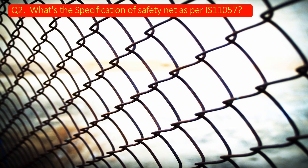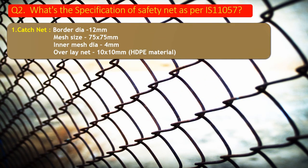Question number 2: What is the specification of safety net as per IS-2105? As per IS-2105, the first type of net is the catch net. The specifications of this net are: border diameter 12 mm, inner mesh size 75 by 75 mm, inner mesh diameter 4 mm, and overlay net 10 by 10 mm made of SDP material.